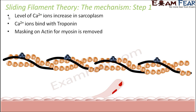In the previous slide we just saw how this process of muscle contraction is initiated. Now as soon as the signal reaches the muscle fiber, the calcium ions will begin to increase in the cytoplasm. That is the start of the process of muscle contraction. The level of calcium ions will increase in the sarcoplasm. What will these calcium ions do? These calcium ions will start to bind with troponin.